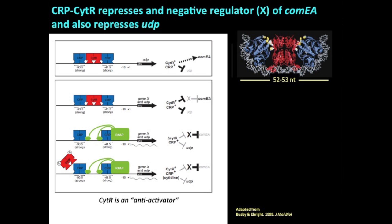Our model was that CytR, as an anti-activator, prevents activation by polymerase — it's a repressor. Cytidine always works as a repressor. We saw that it had a positive effect on DNA uptake. So our model was that yes, it's a repressor of some factor we need to find called X, which then represses ComEA — so the way it's working is repressing a brake. That was our model consistent with E. coli.